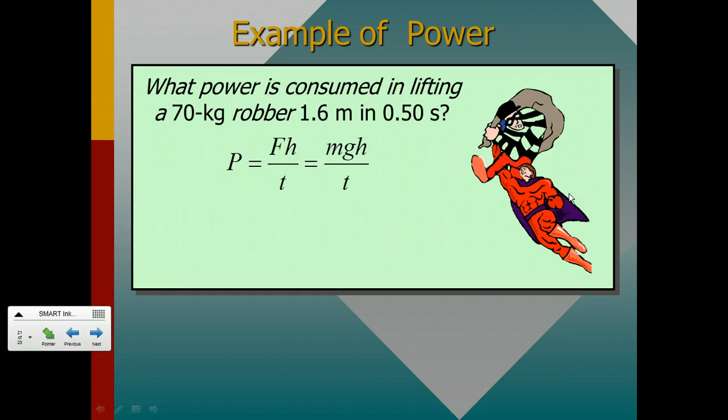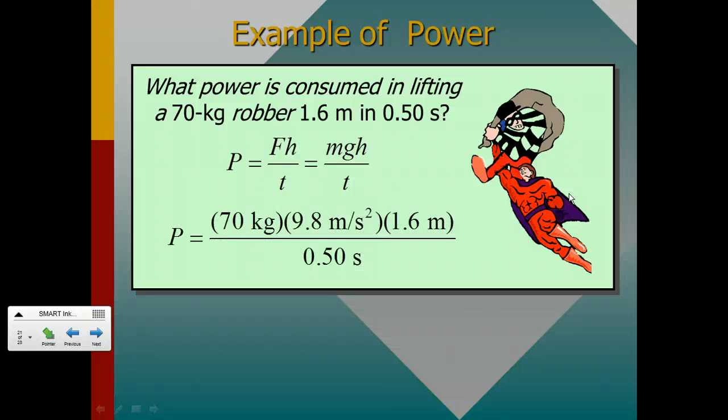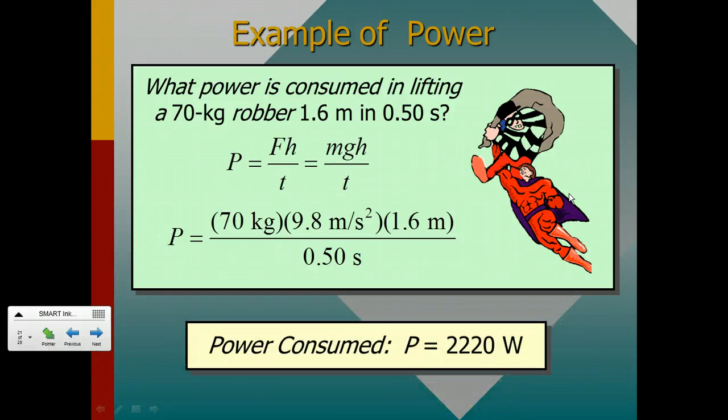Welcome back. So the power consumed is going to be, again, our force times our distance. Our distance in this case, because it's a height, we can replace with H for height, and we're going to get that it's 70 kilograms times 9.8 times 1.6 meters as our work done. So when that is all said and done, we divide that by our time, 0.5 seconds, and so it takes 2,220 watts to lift this person in that amount of time.